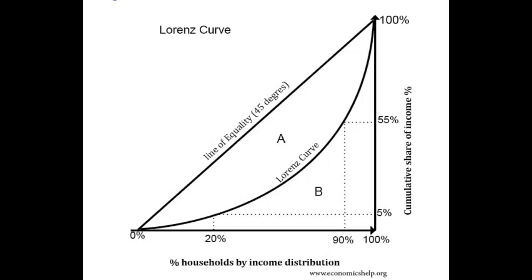The Lorenz curve was introduced by American economist Max O. Lorenz in 1905 to represent wealth distribution.